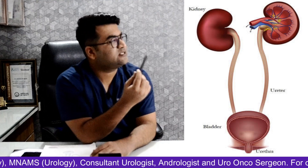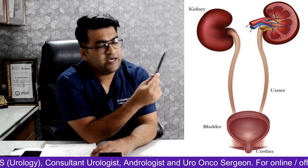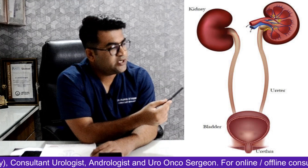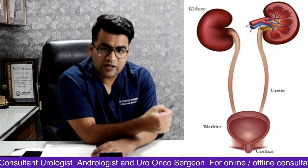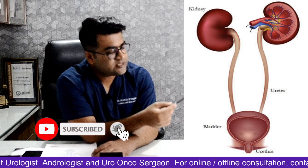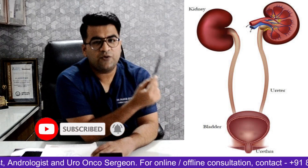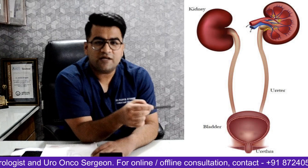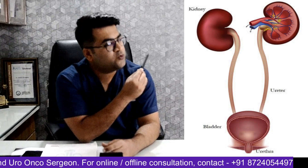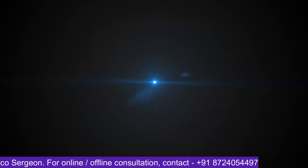The urinary system is basically formed of the kidney. From the kidney there is a tube called the ureter. The ureter opens up inside the bladder, and the passage out is called the urethra. So kidney, ureter, bladder, and urethra constitute our urinary system. Any stone which is formed here is called urolithiasis.